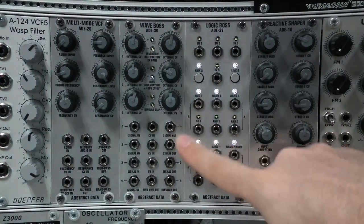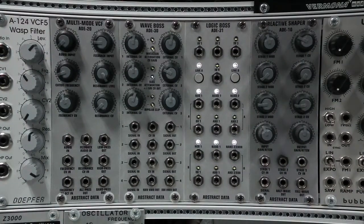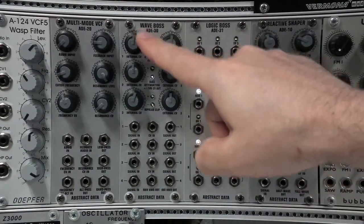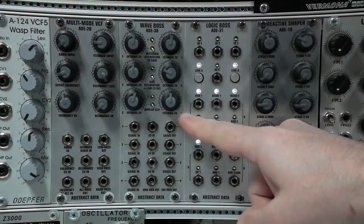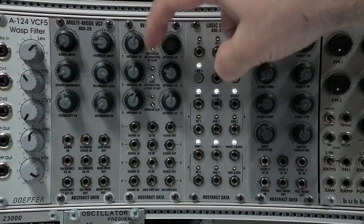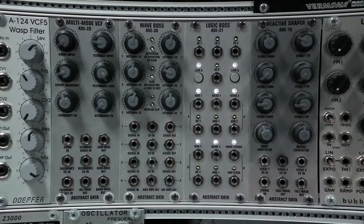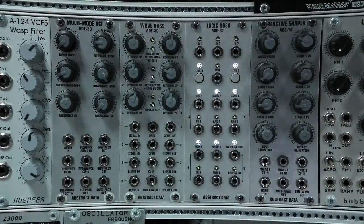The ADE30 is a four-stage multi-function waveform and CV utility module. There's CV control and onboard attenuation where applicable, and all outputs have LED indicators for the positive and negative going halves of output waveforms. All inputs are DC coupled and will work with just about any signal you can find in the Eurorack environment.